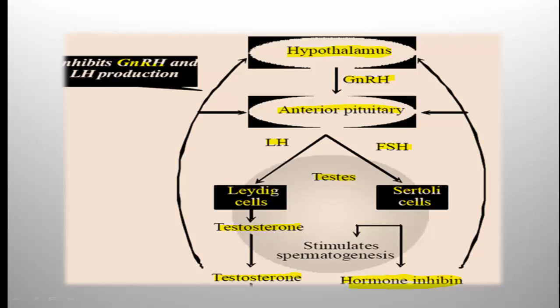Both testosterone and inhibin have an inhibitory effect on GnRH production from the hypothalamus. This is how these hormones regulate spermatogenesis in males. The schematic representation also needs to be practiced — this is a 3-mark question.